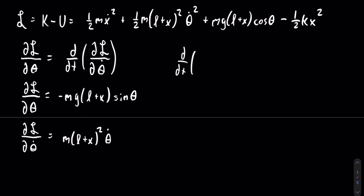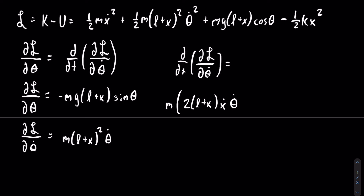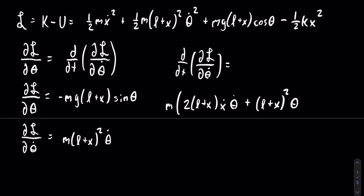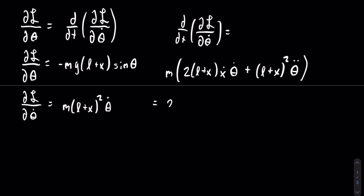Lastly, we need to find the time derivative of the partial of the Lagrangian with respect to theta dot. For that we will need to use the product rule. We can factor out m since it is a constant. We take the derivative of the first part, which gives 2 times the quantity l plus x, multiplied by x dot and then by theta dot, and then add it to the quantity l plus x, squared, times the derivative of the second part, which is theta double dot. After multiplying out, this is equal to 2m times l plus x, times x dot theta dot, plus m times the quantity l plus x, squared, times theta double dot.